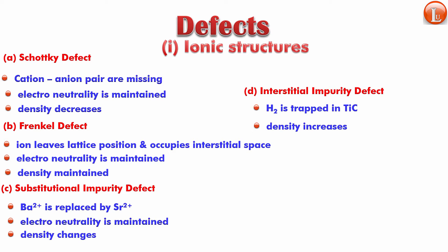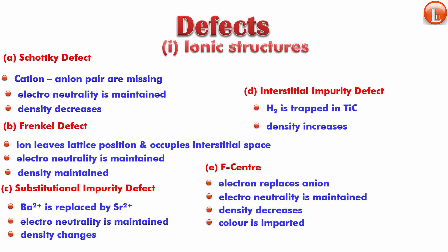And the last of the defects in ionic structures is called the F-center defect. In the F-center defect an electron will replace an anion. If there are two anions going, then two electrons would come and occupy that, so that way electron neutrality is maintained. Density will decrease because anions are being replaced by electrons. Color is imparted because electrons are replacing them and electrons can always get excited. They can absorb a certain amount of energy and come back to the lower level, and therefore color would be imparted in such a situation.